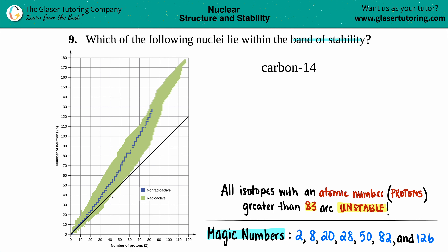All these green ones are unstable isotopes, so there are way more unstable isotopes out there than stable ones. Now, if you want to find out if you're in the band of stability, the first thing you have to find out is the total number of protons and neutrons. In this case we have carbon-14, and the number at the end of the element is always your atomic mass — the total number of protons plus neutrons.